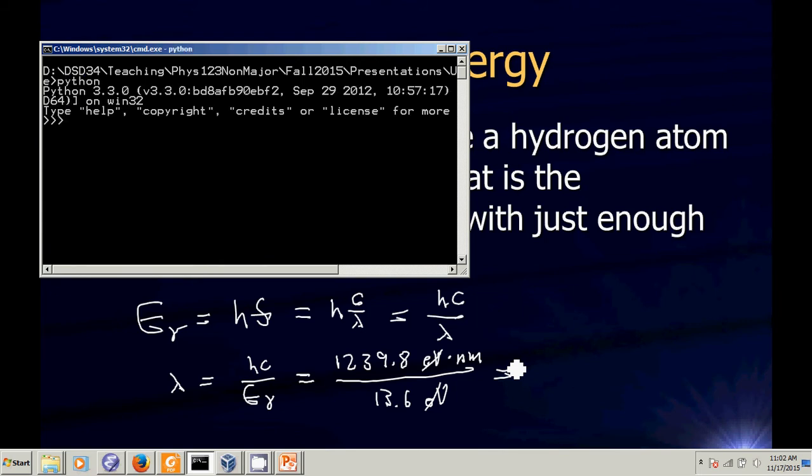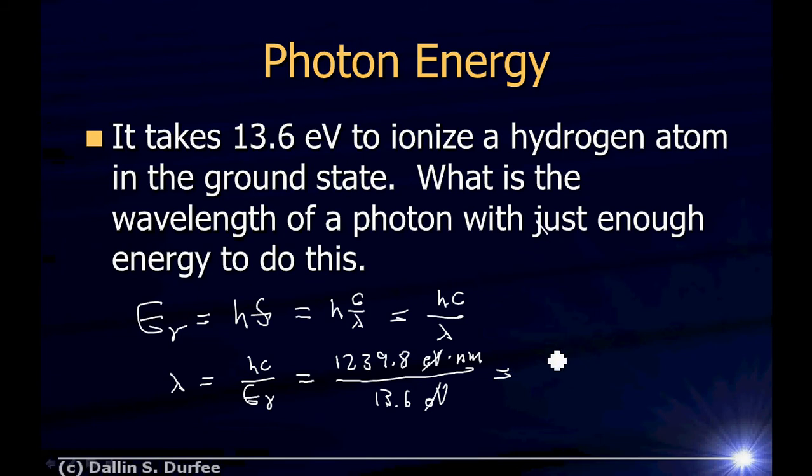Let's go into Python, and we'll say 1,239.8 divided by 13.6, that gives us 91.2 nanometers. There you go. 91.2 nanometers, and that's well short of visible light.